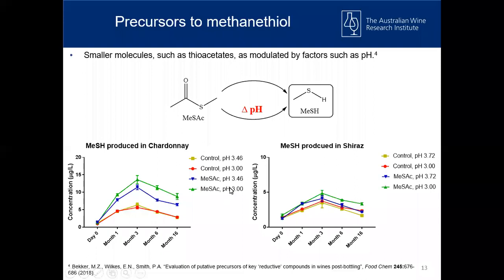But very interestingly, when we added the thioacetate to the wines and dropped the pH, we did see that big increase in methanethiol production from the thioacetate. So this is something to keep in mind — if you know that there are thioacetates present in your wine, be very careful of your pH management.